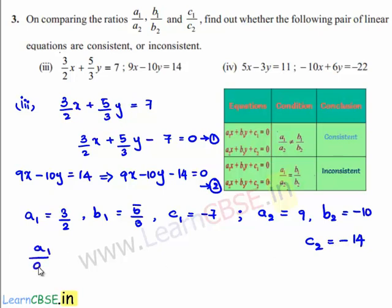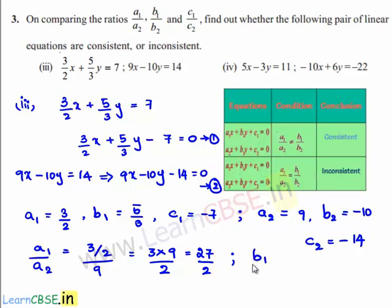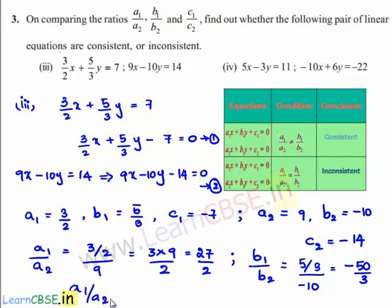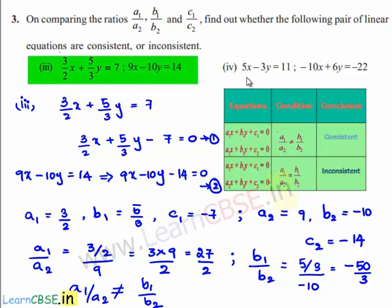Now, the value of a1 by a2 is equal to 3 by 2 divided by 9, which is equal to 27 by 2. And the value of b1 by b2 is equal to 5 by 3 divided by minus 10, which is nothing but minus 50 by 3. So, the value of a1 by a2 is 27 by 2 and the value of b1 by b2 is minus 50 by 3. Therefore, a1 by a2 is not equal to b1 by b2. We can conclude that the given set of linear equations 3 by 2x plus 5 by 3y is equal to 7 and 9x minus 10y is equal to 14 are consistent.